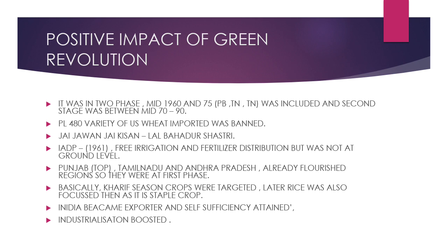The PL 480 variety imported was low quality and caused a lot of economic loss to the country. Following this, the Green Revolution foundation was laid. Lal Bahadur Shastri gave the 'Jai Jawan Jai Kisan' slogan to motivate farmers. In 1961, the IADP — Intensive Agriculture Development Program — was also launched, providing free irrigation and fertilizer distribution, but this program failed to reach the ground level.